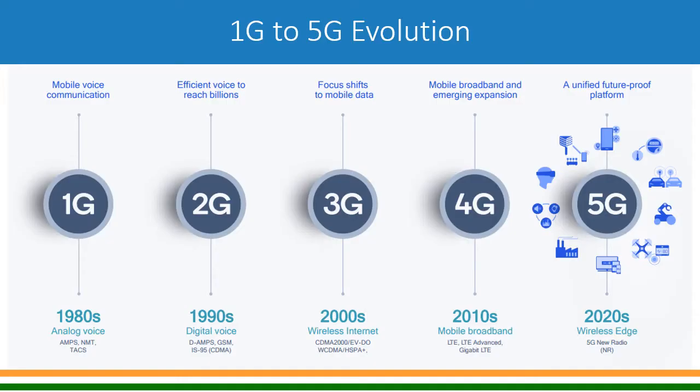Let's look at 1G to 5G evolution of mobile telephony. Mobile voice communication started for the first time in the 1980s — that was the first generation of mobile telecommunication. It was analog voice, and the technologies used were AMPS, NMT, and TACS.